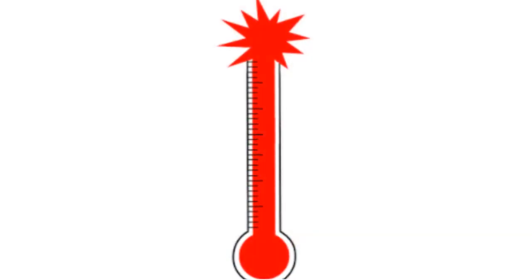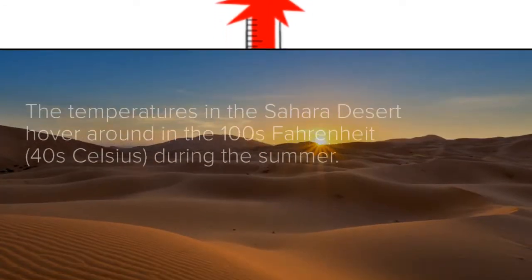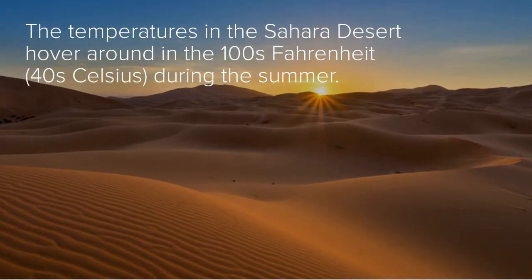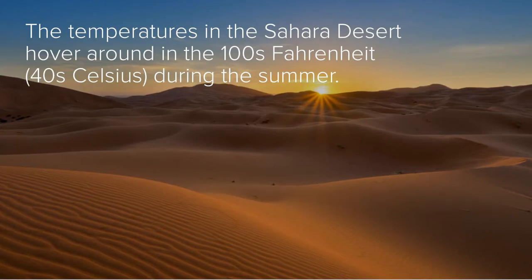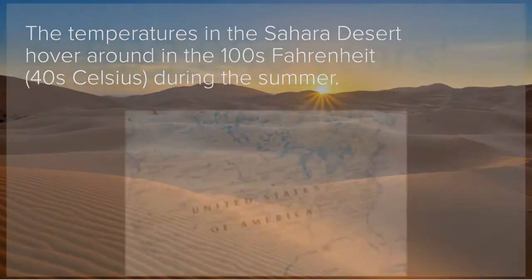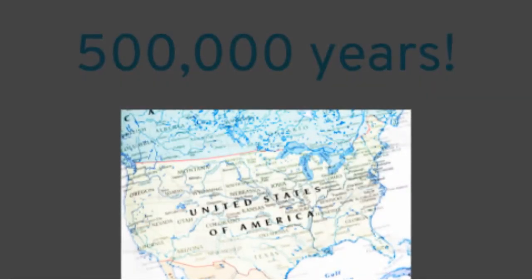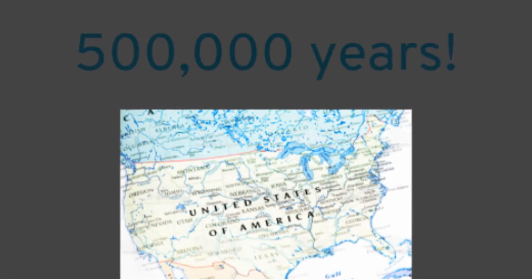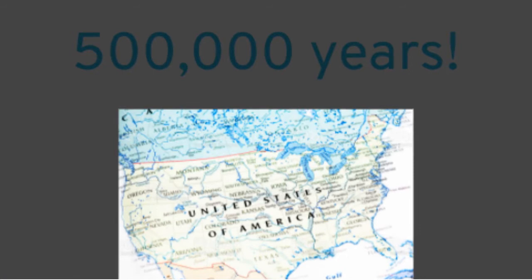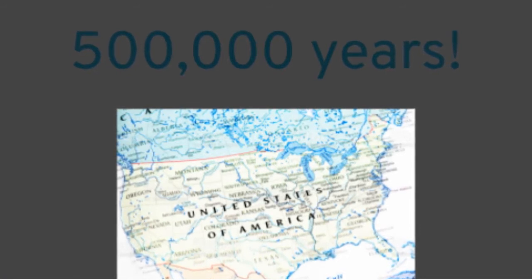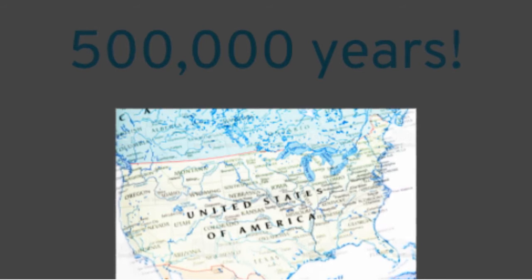The Earth's average temperature was 107 degrees Fahrenheit, or 42 degrees Celsius — that's the average temperature of the Sahara Desert today. The eruptions continued for half a million years until the lava covered an area the size of the continental United States in three feet, or one meter, of lava.